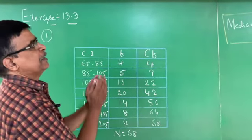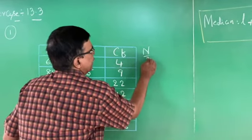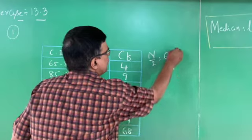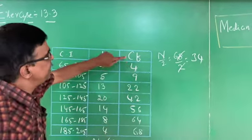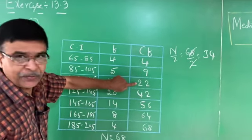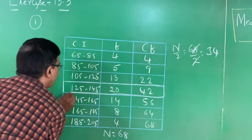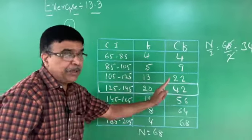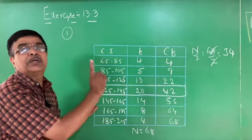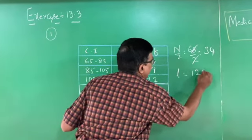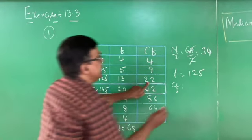The formula is Median = L + [(N/2 − CF) / F] × H. N is 68, so N/2 = 68/2 = 34. Now observe: 34 lies in which class interval in the CF column? CF values are 4, 9, 22, 42... So 34 lies between 22 and 42. Therefore, the median class is 125 to 145. L equals 125.